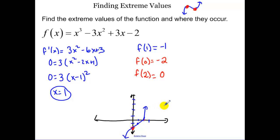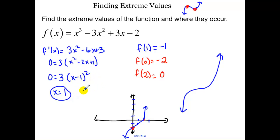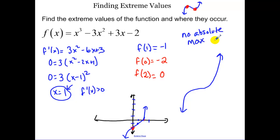I drew a bad picture there, but if you graph it on your calculator, it looks like the function goes to zero slope and then goes back to increasing. It's going to be very clear in a few days that my derivative f prime of x is always greater than zero, so my function is always increasing. So even though I got a critical point, we have no extreme values — no absolute max or min, and no local max or min.